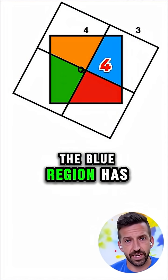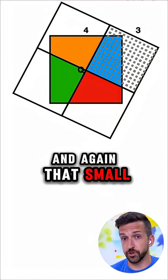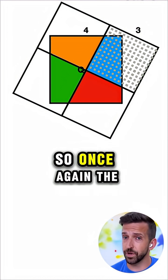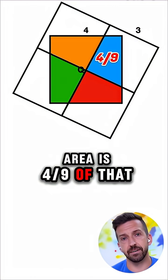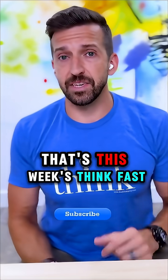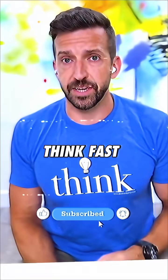Well that just means the blue region has an area of 4, and again that small square had an area of 9. So once again, the area is 4 9ths of that smaller square. That's this week's Think Fast, we'll see you next week.